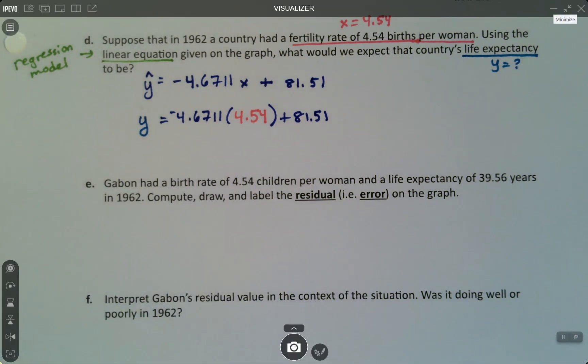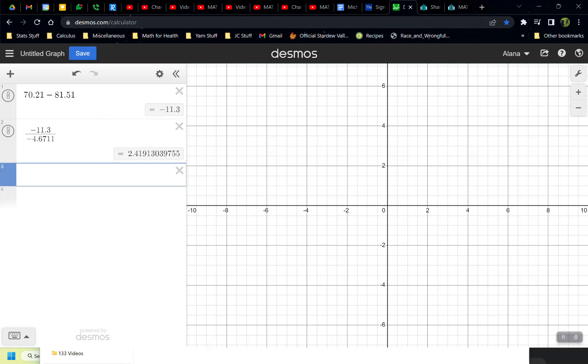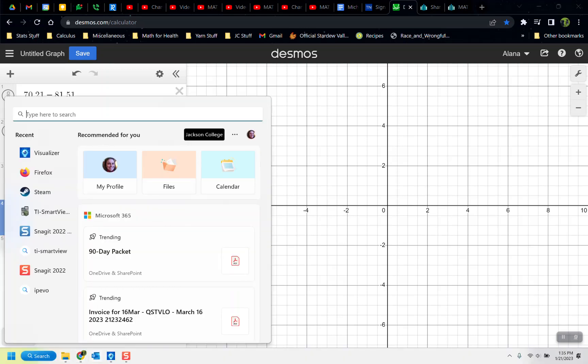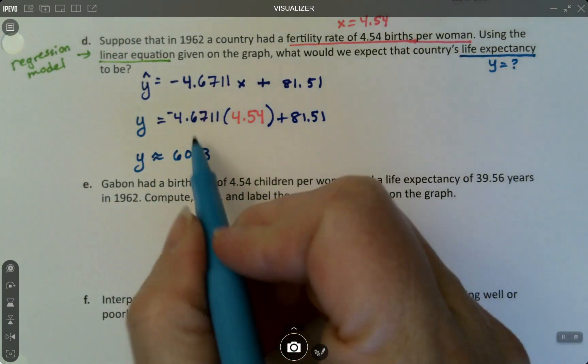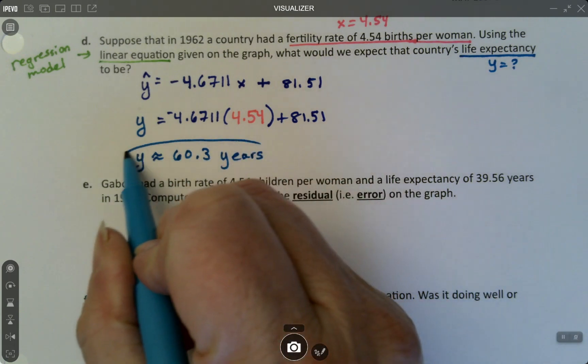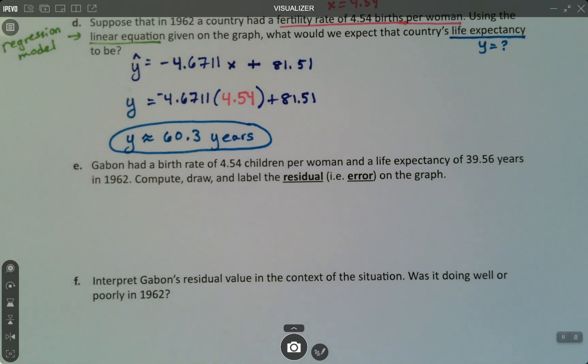So now I'm going to substitute. I know that the x is 4.54. So when I write the equation, I'm going to say negative 4.6711, and in place of the x, I'm going to write 4.54 plus 81.51. This will be equal to my y, and this is a much simpler problem than the previous problem. So we just go type this into Desmos. I will caution you, type it like you see it. So negative 4.6711 times 4.54, plus 81.51. I can't stress this enough. You really have to type it like it looks.